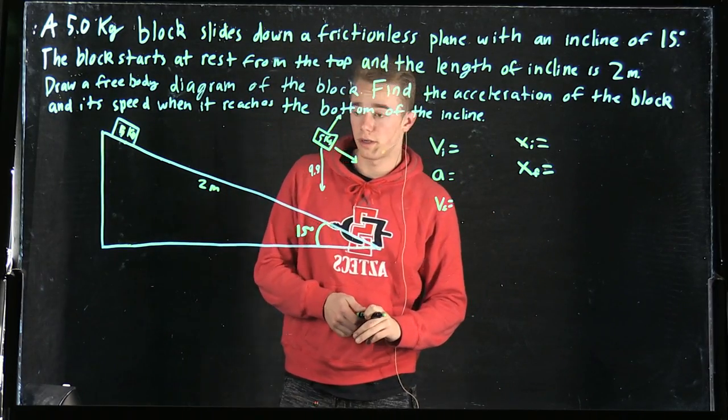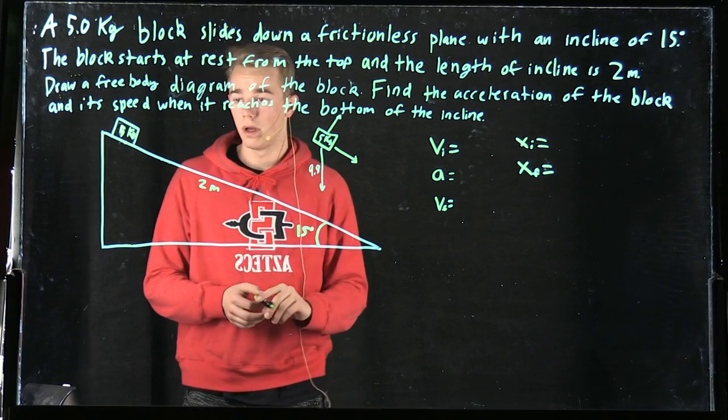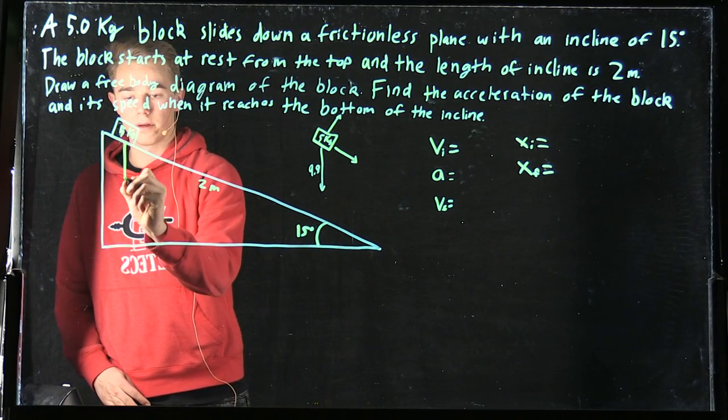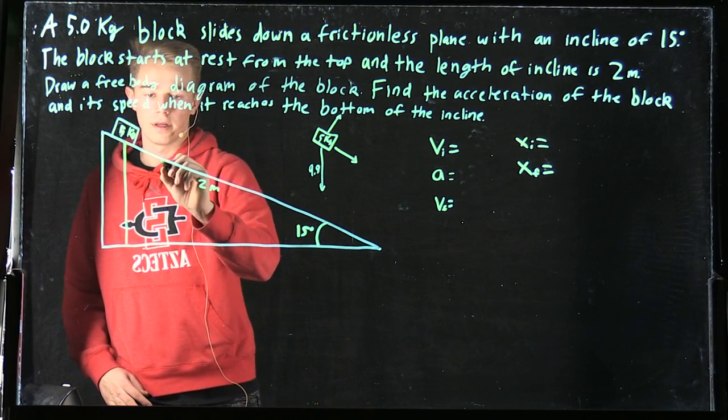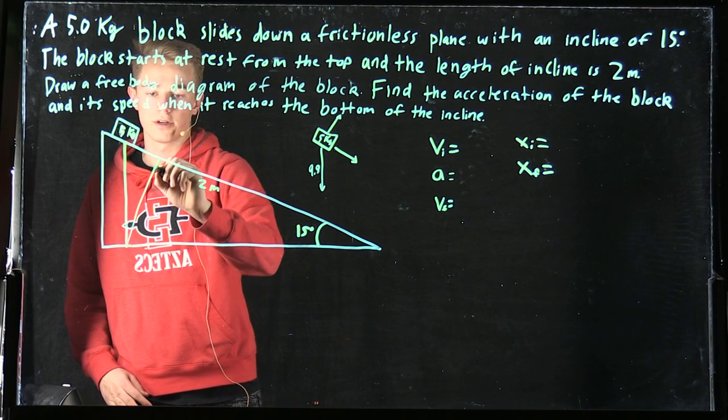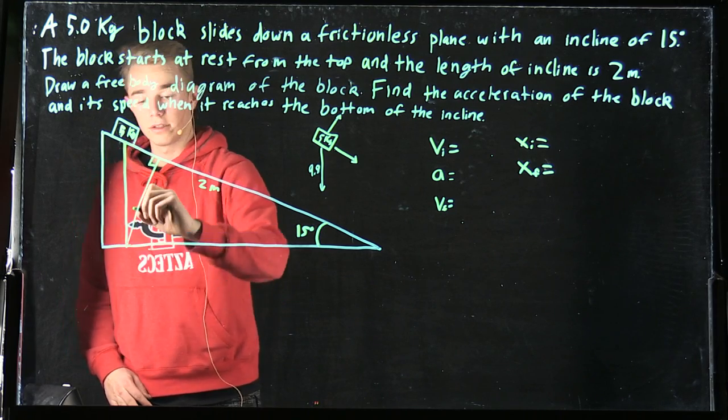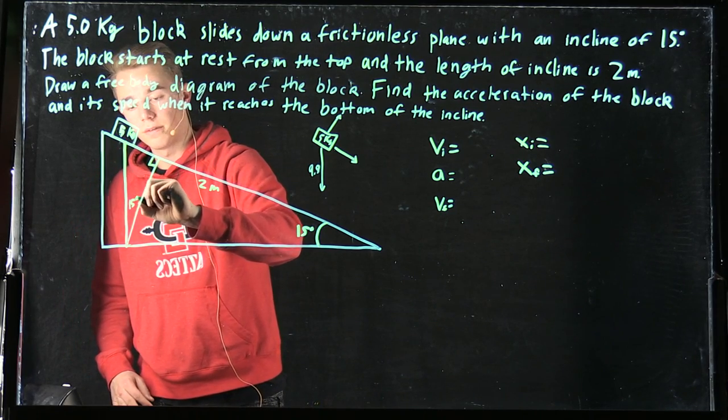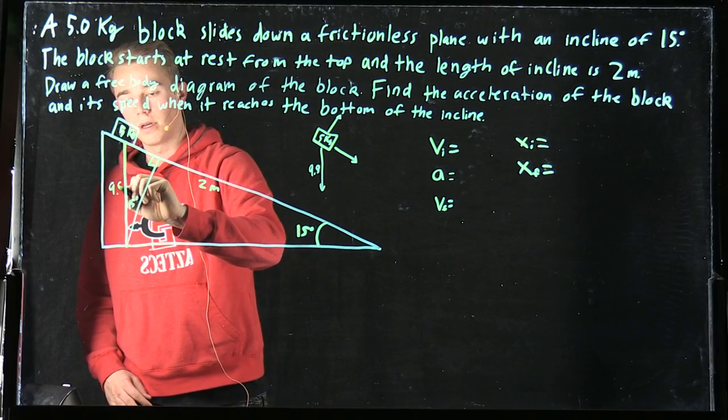First, we'll go ahead and find the acceleration. We have the force of gravity coming down, and we can make that into a right triangle. It actually has the same angle over here, which is 15 degrees. This is 9.8.